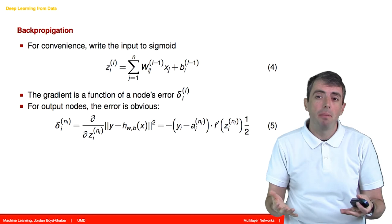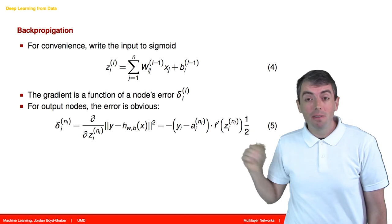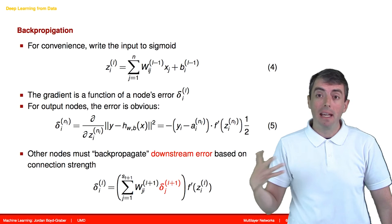We're not going to derive the backpropagation here. If you know calculus, it's handy to go through this and just make sure that it matches what we get here. But intuitively, after the fact, it makes a lot of sense. What does it mean for an internal hidden node to make an error in this case?